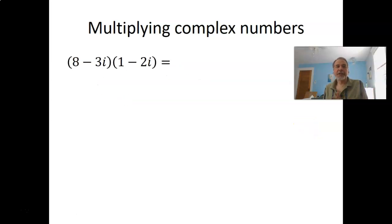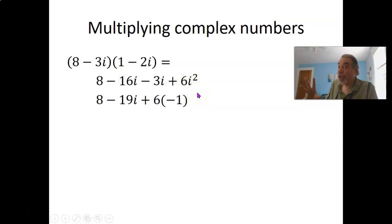What about multiplying complex numbers? Well, again, sort of think as if the i were any other variable. Multiply things out, like with the FOIL method. So first we have 8 times 1 is 8. On the outside we have 8 times minus 2i is minus 16i. On the inside we have minus 3i times 1 is minus 3i. And last we have minus 3i times minus 2i is plus 6i squared. Then we can combine like terms in the middle. And remember what I said you can do with i squared. Anytime you see i squared, that's really just negative 1.